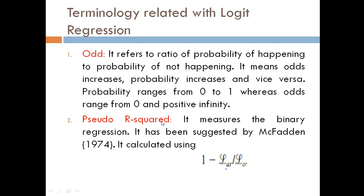Number two is pseudo R-squared. This is used to measure the binary regression, similar to R-squared in linear regression models. It has been suggested by McFadden in 1974 and is calculated using the formula 1 minus LUR upon L₀.